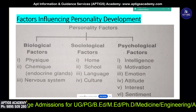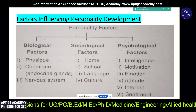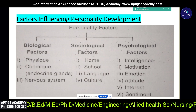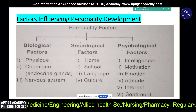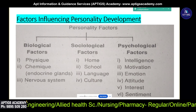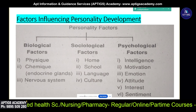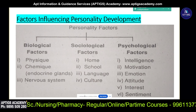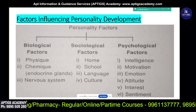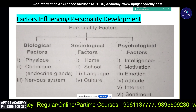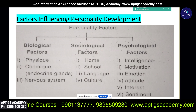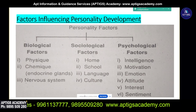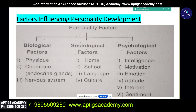We are talking about health. If you have any type of personality, you can use any type of personality or any type of personality as a theory. Then we categorize personality development and factors. Firstly, biological factors — it is a physical factor and a chemical factor. The nervous system is also included here.